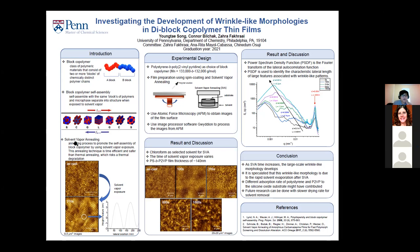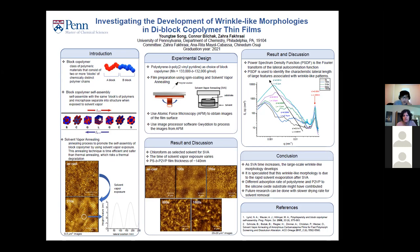Another thing I want to introduce is solvent vapor annealing, which is one of the annealing techniques that promotes self-assembly. Although block copolymers can self-assemble, they need some annealing process to initiate this. Solvent vapor annealing initiates this by exposing the thin film to solvent vapor. This is an AFM image of an AB block copolymer thin film without solvent vapor annealing. After 300 seconds with solvent vapor annealing, the same film now has a specific morphology: a lamellar structure that is standing up, or out-of-plane lamellae, with a thickness of around 100 nanometers.